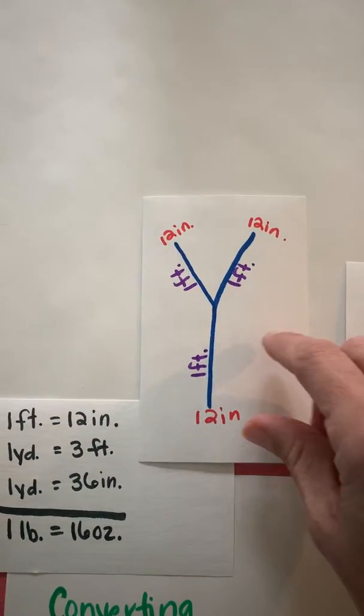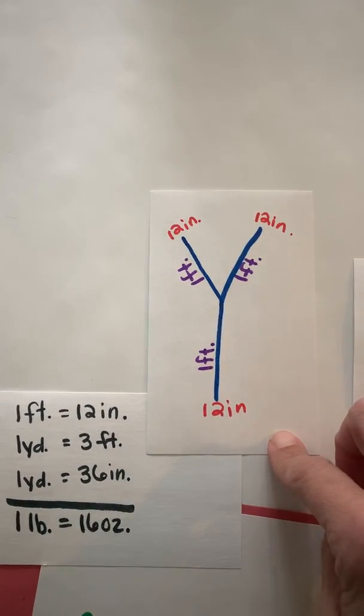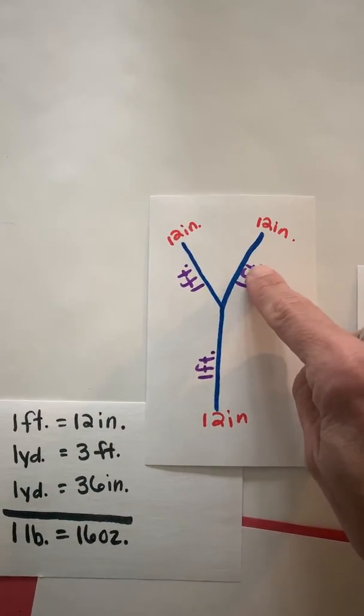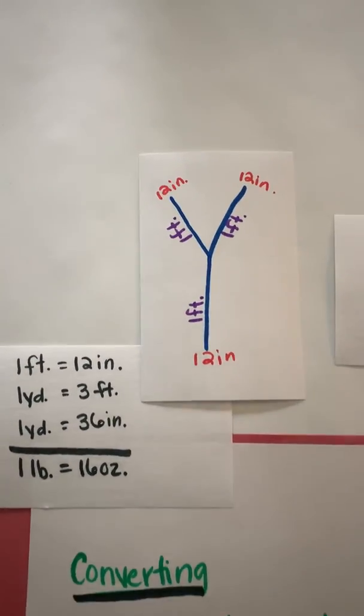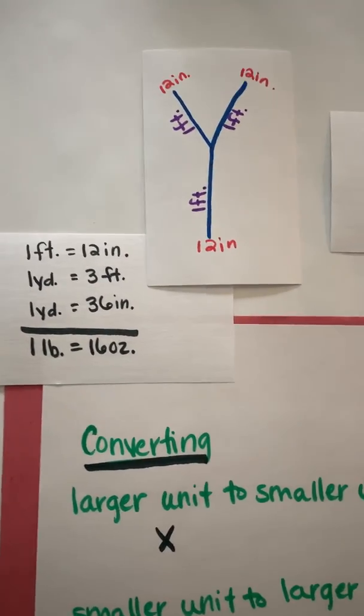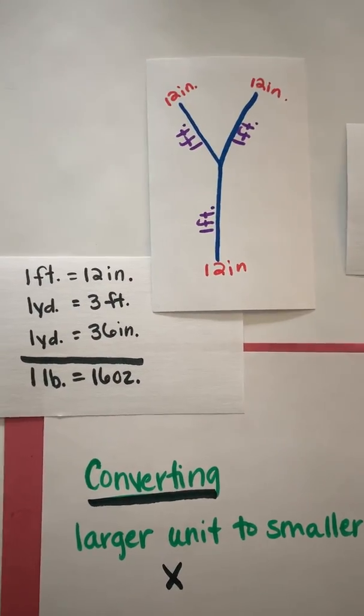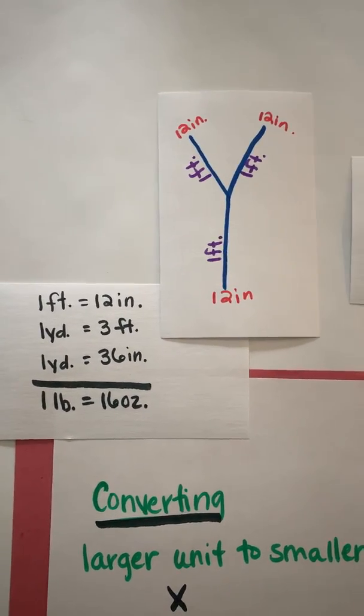So if I want to know how many inches are in a yard, then 12, 12, 12 would be 36, or how many feet are in a yard, three. So that's an organizer that can help you when you've got to solve a problem with converting in customary length. You can draw that or think of that to help you with your conversions.